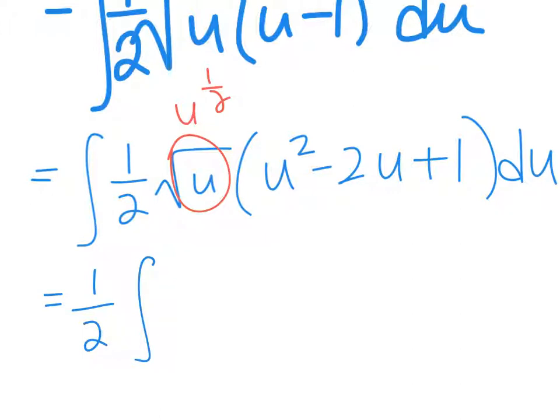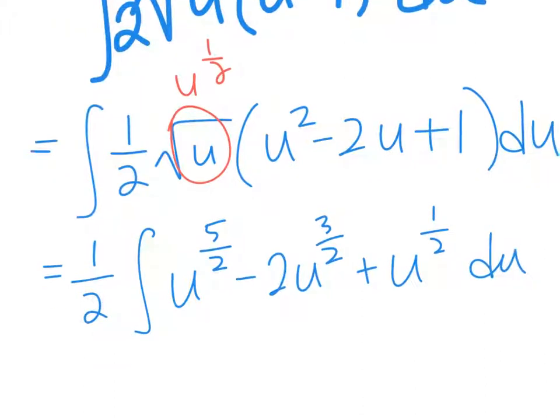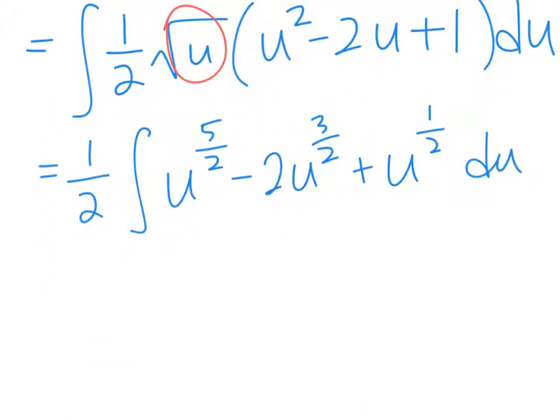Okay, so this is u to the 5 halves minus 2 times u to the 3 halves plus u to the 1 half, du. Okay, now you can integrate that, right? So go ahead and do that.